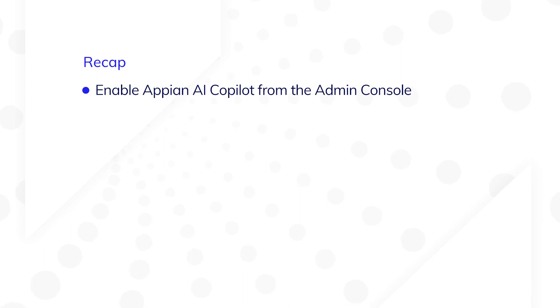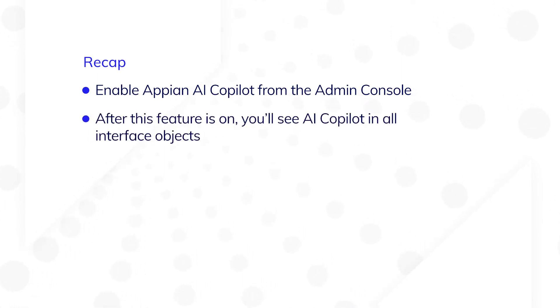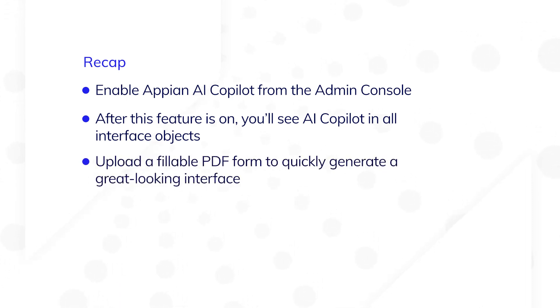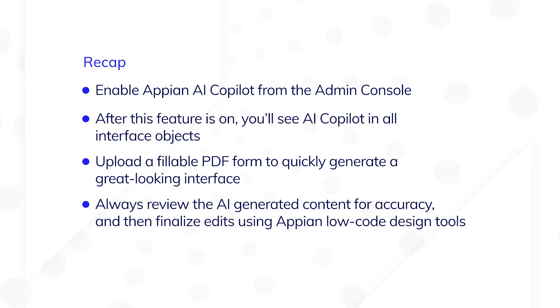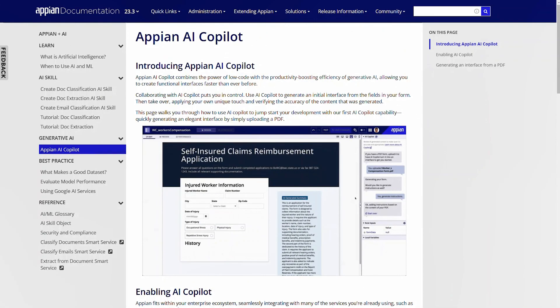Let's recap. You can enable Appian AI Copilot from the Admin Console. After this feature is turned on, you'll see AI Copilot in all interface objects. Upload a fillable PDF form to quickly generate a great-looking interface. Always review the AI-generated content for accuracy, and then finalize edits using Appian low-code design tools. For frequently asked questions about AI Copilot, check the corresponding page in Appian documentation. Thanks for watching and happy learning!